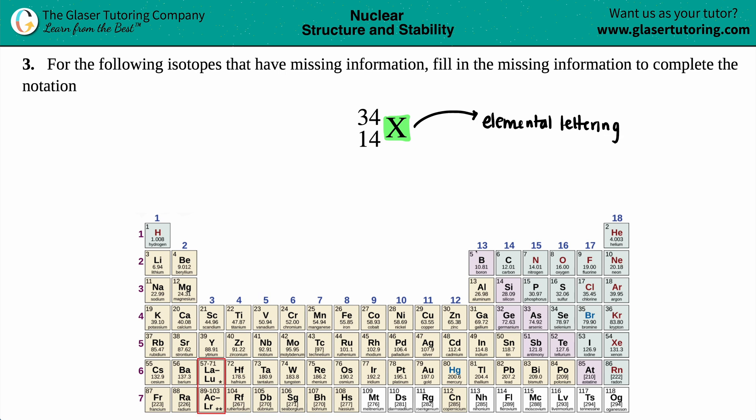On the periodic table, it's all the shorthand lettering - B for boron, C for carbon, N for nitrogen, O for oxygen, and the list goes on. We just have to figure out who this is. There's two numbers here, 34 and 14 - which one is going to lead us to finding out what element this is?